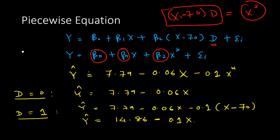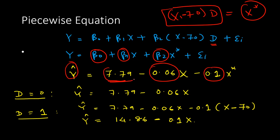Using the data, we have estimated the equation and found that ŷ = 7.79 − 0.06x − 0.1x*. There are two slope coefficients: β₁ = 0.06 and β₂ = 0.1, and the intercept β₀ = 7.79.